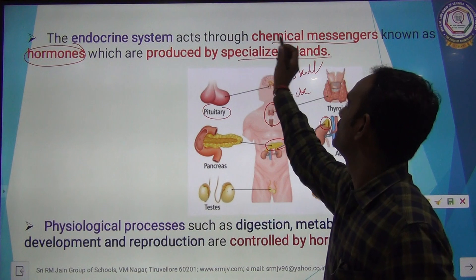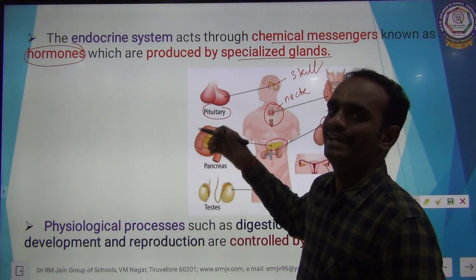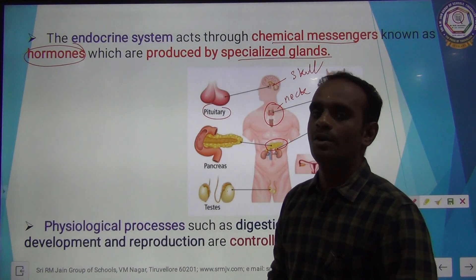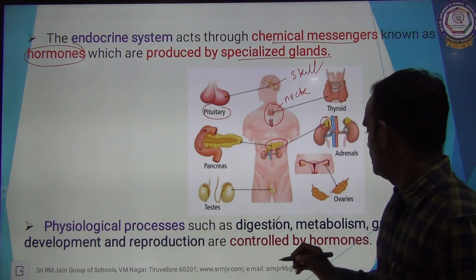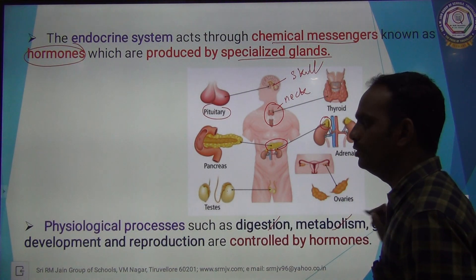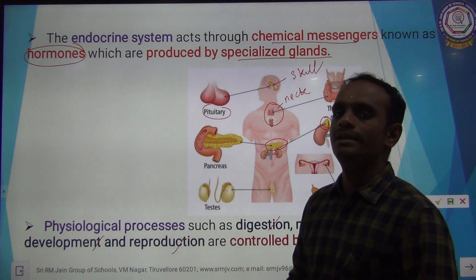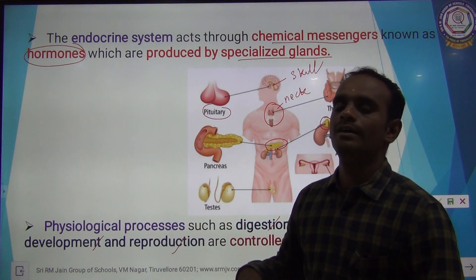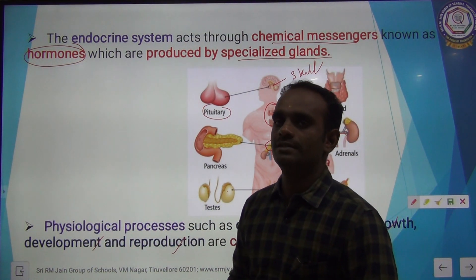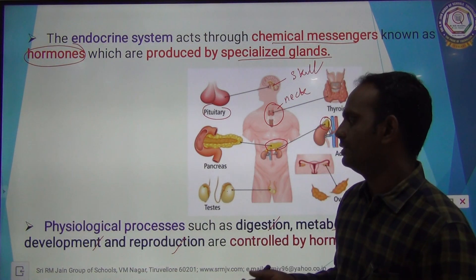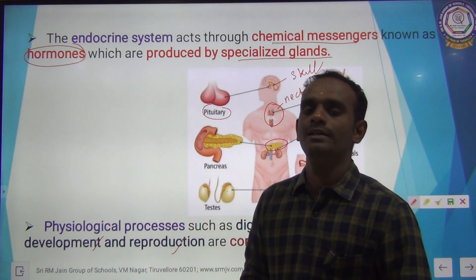The endocrine system acts through chemical messengers known as hormones, which are produced by specialized glands in the body. Physiological processes such as digestion, metabolism, growth, development, and reproduction are all controlled by hormones.